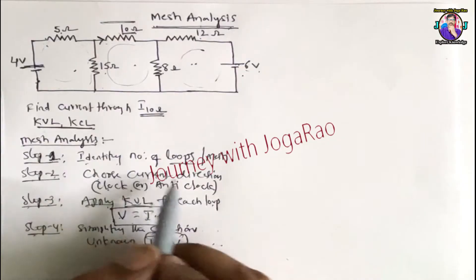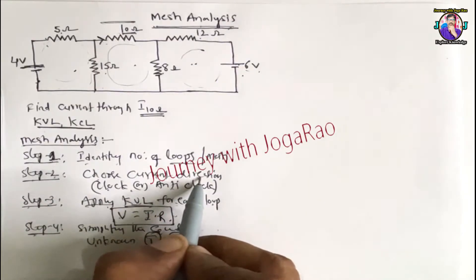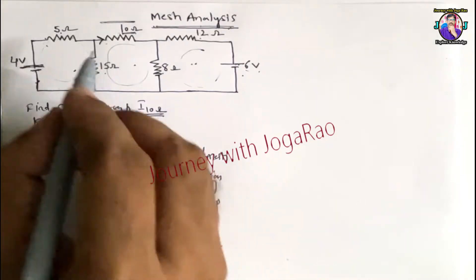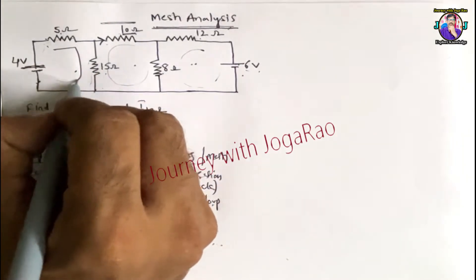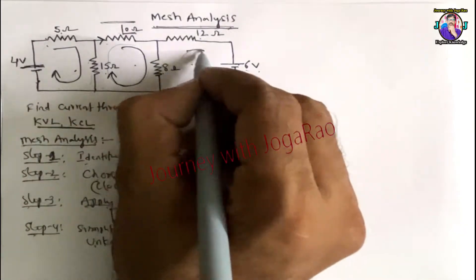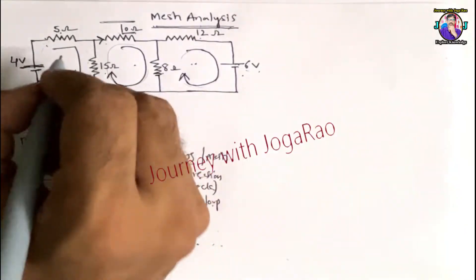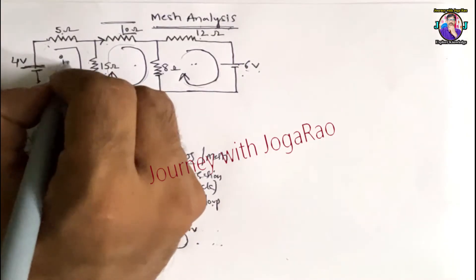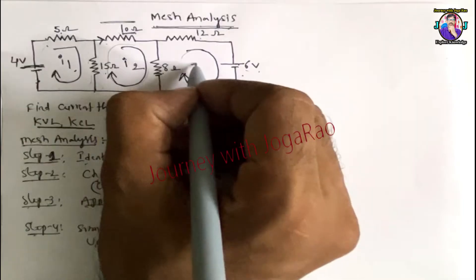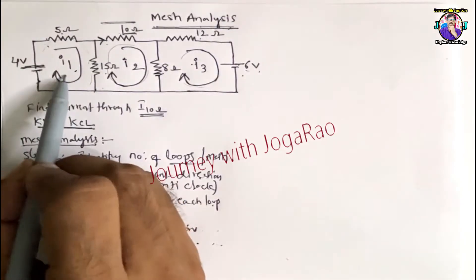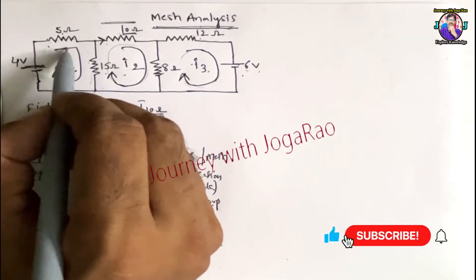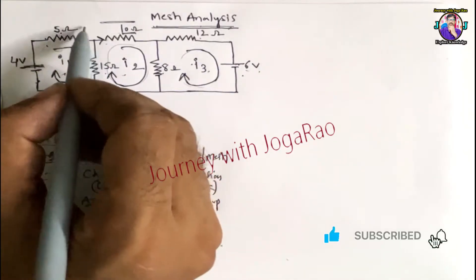Choose current direction. For the 3 loops, we choose current direction. Loop 1 has current I1, loop 2 has current I2, and loop 3 has current I3 — so three loops, three currents. All are in the clockwise direction.